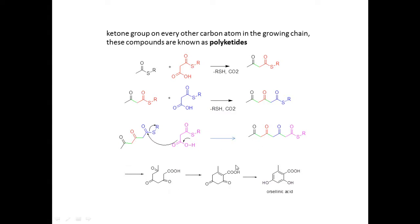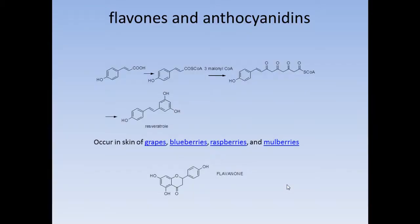Here we redraw and cyclize these products, further converting the ketone to a double bond, when OH gives orsellinic acid. This is a shorthand pathway of polyketide synthesis, related to the natural product orsellinic acid. Another concept of this type of ester condensation is flavone synthesis and anthocyanidin synthesis. These molecules occur in the skin of grapes, blueberries, raspberries, and mulberries.